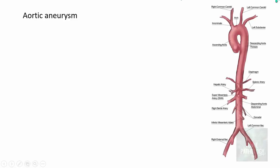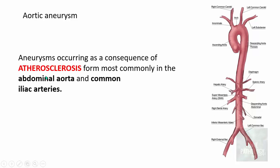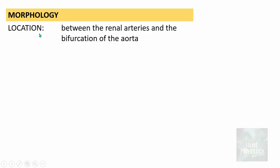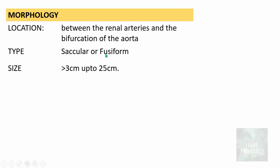Now let's study in detail about aortic aneurysm. The different parts of the aorta are the ascending aorta, the arch of aorta, and the descending aorta, divided into thoracic aorta and abdominal aorta. Aneurysms occurring as a consequence of atherosclerosis form most commonly in the abdominal aorta and common iliac arteries. Abdominal aortic aneurysms are more common in men and smokers. Morphologically, they are located between the renal arteries and the bifurcation of the aorta, and can be either saccular or fusiform type.